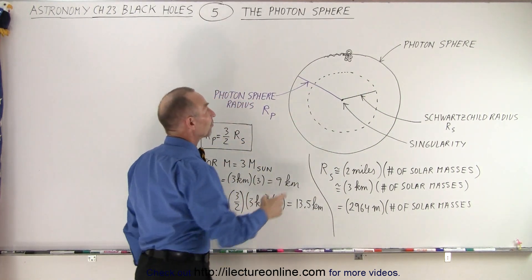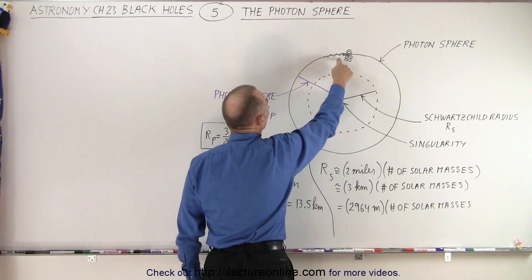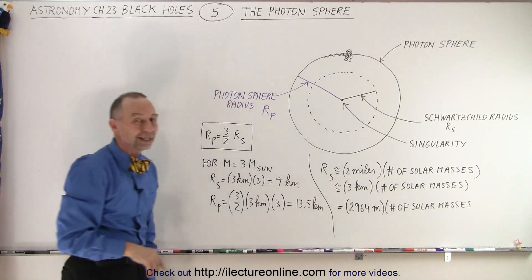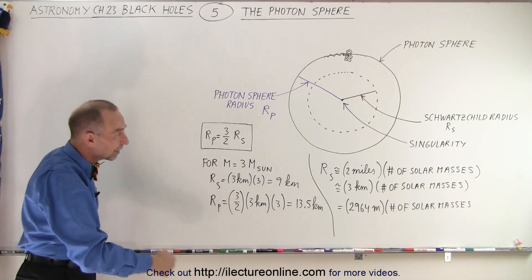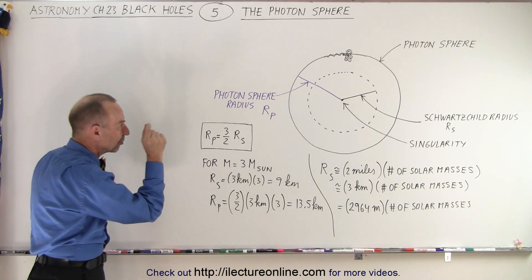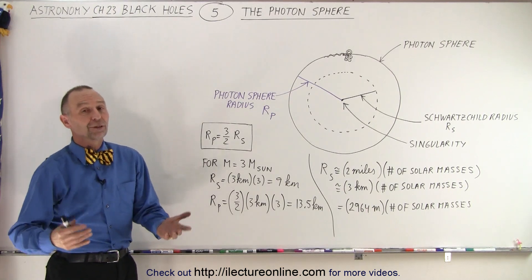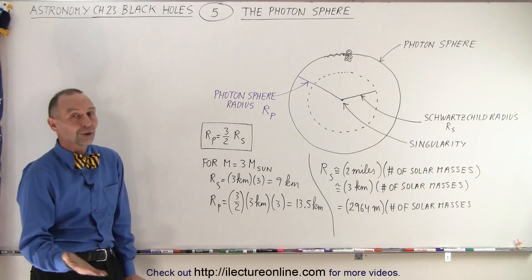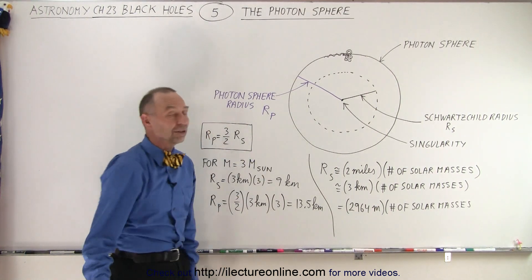At the photon sphere, light simply travels around and around. Notice that if you're closer than that, the light would simply go in. And if you're farther than that, the light would go away from the black hole. That's the concept — the photon sphere is where light keeps going around and around if placed perfectly on it. Only photons can do this, because no other material can travel at the speed of light, so no other material can actually travel around the black hole at that particular location.